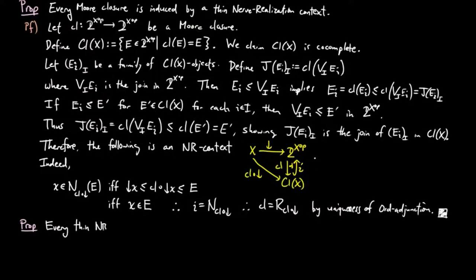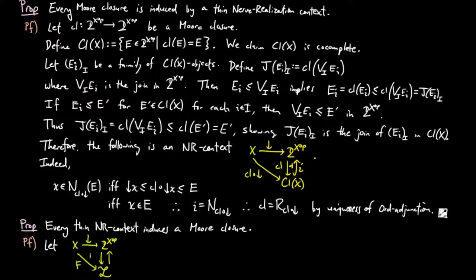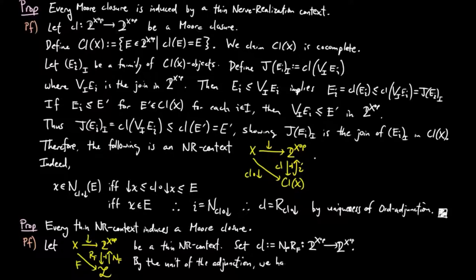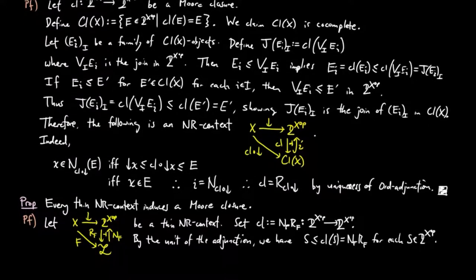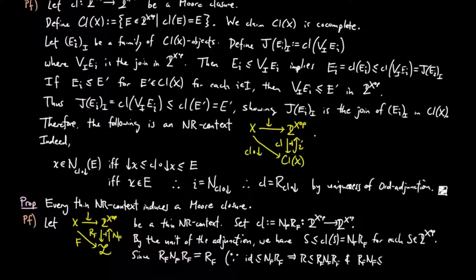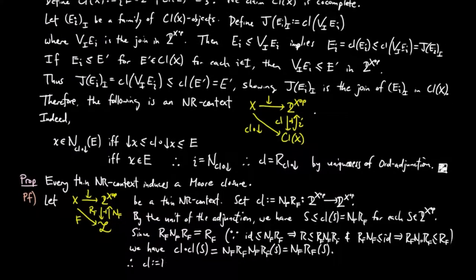Conversely, every thin nerve-realization context induces a Moore closure. For the proof, let the following diagram be the thin nerve-realization adjunction induced by the NR context f. Set the candidate closure operator to be NR. The unit of the adjunction gives us s is less than or equal to the closure of s for each downward closed subset of x. We have R∘NR equals R, since the identity less than or equal to NR implies R is less than or equal to R∘NR, and R∘N less than or equal to the identity implies R∘NR is less than or equal to R. So the closure of the closure of s equals NR∘NR(s) equals NR(s) equals the closure of s. Therefore NR is a Moore closure.